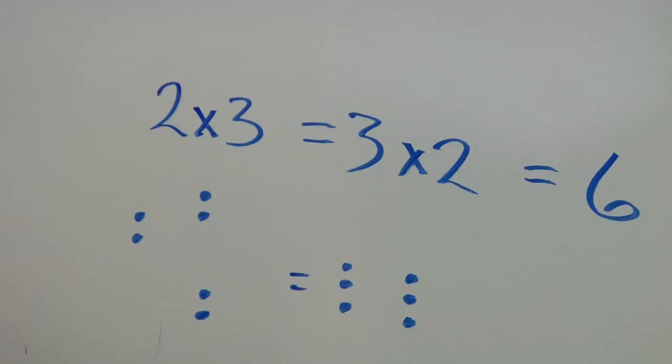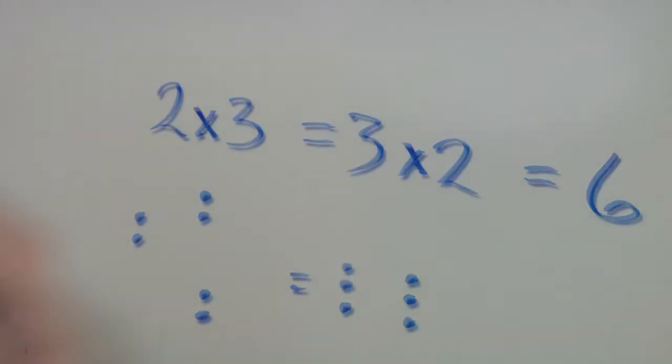Order also doesn't matter when you're multiplying. Let's check that out. The commutative property of multiplication says that it doesn't matter if you multiply two three times, so two times three, or if you have three two times. So check this out.